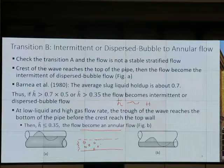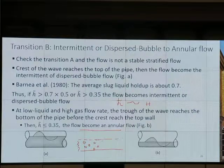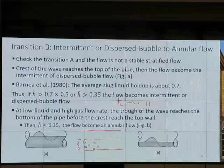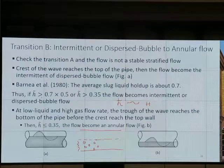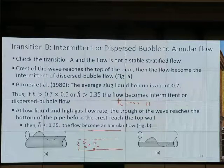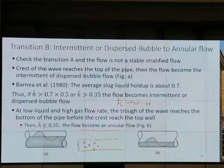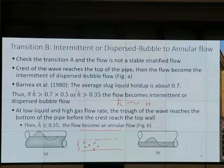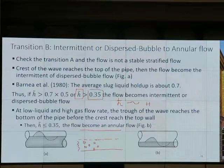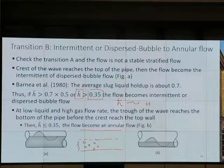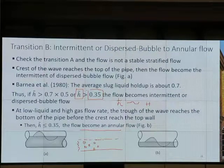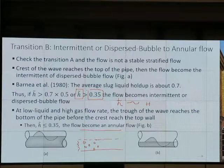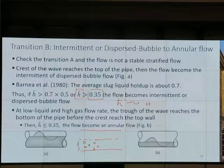We say when it is at half, it is a condition where we won't have annular flow. If it is half or more than half, we don't have annular flow. At that half, the actual liquid holdup will be 0.5 multiplied by 0.7, because we say this liquid body has liquid holdup of 0.7. We say H tilde about 0.35 is the transition boundary. If it is less than 0.35, we have annular flow. If it is more than 0.35, we either have intermittent flow or dispersed bubble flow.